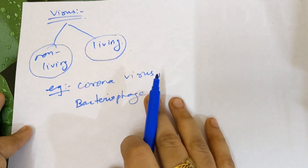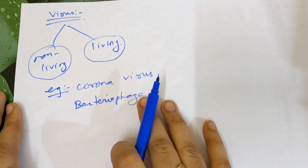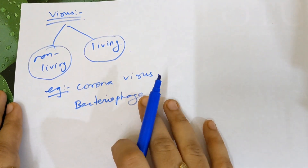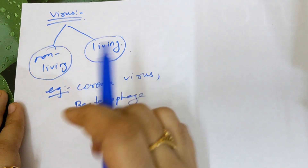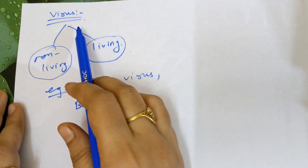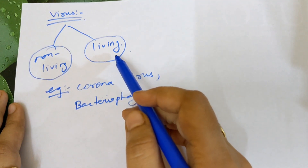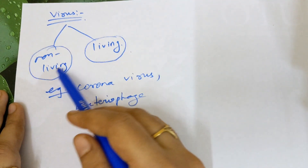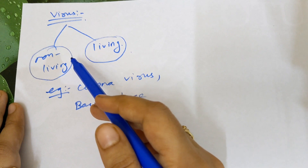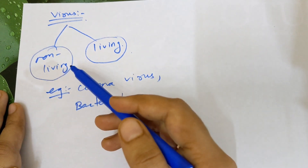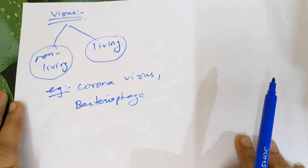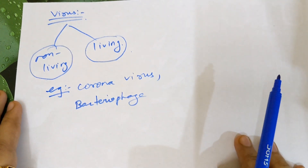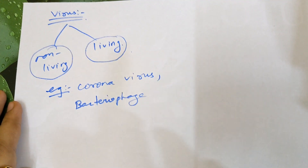Virus is still under study and we are not able to study it completely because it comes between non-living and living. When present inside the body it is living; when outside the body it is non-living. So these are the five categories of micro-organisms — I hope you all understood. Thank you so much.